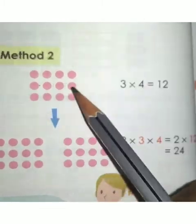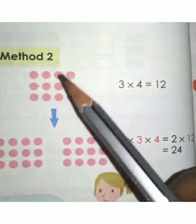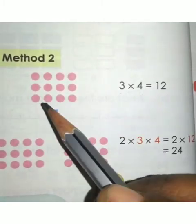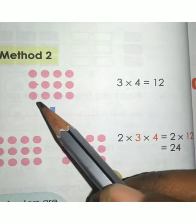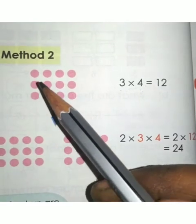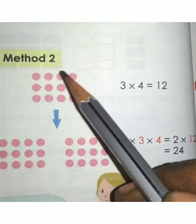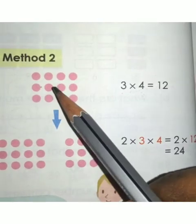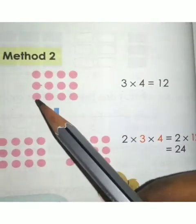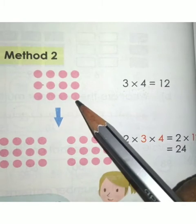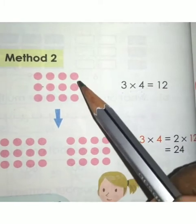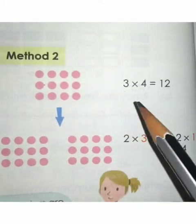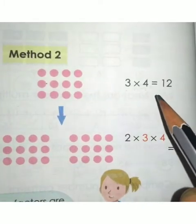So 3 rows and 4 columns — how many dots? Counting gives 12 dots. Therefore 3 × 4 = 12.